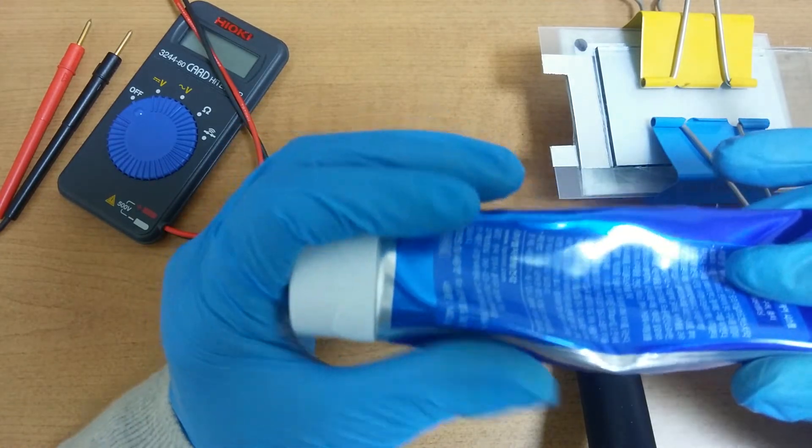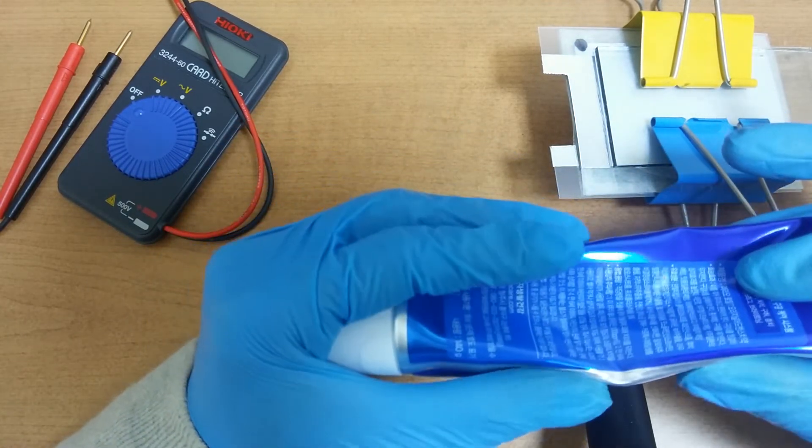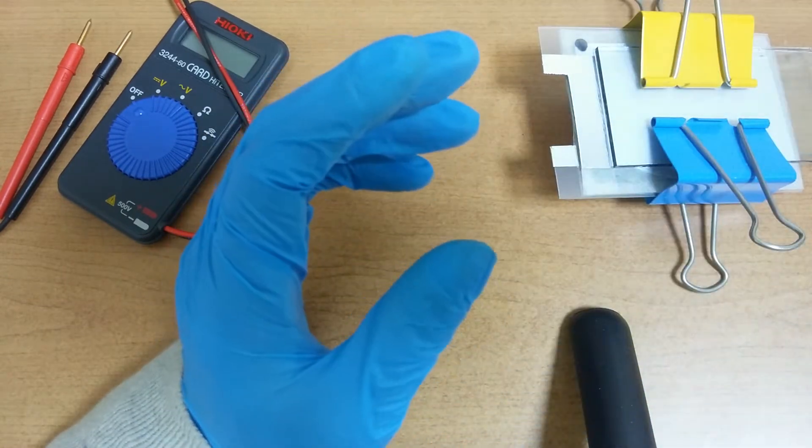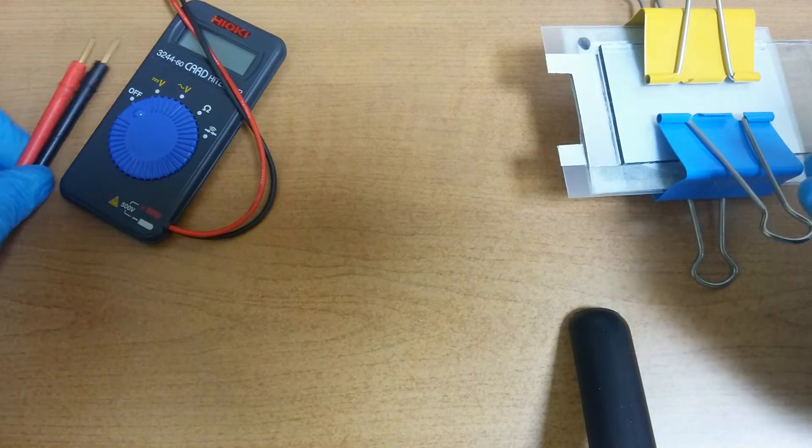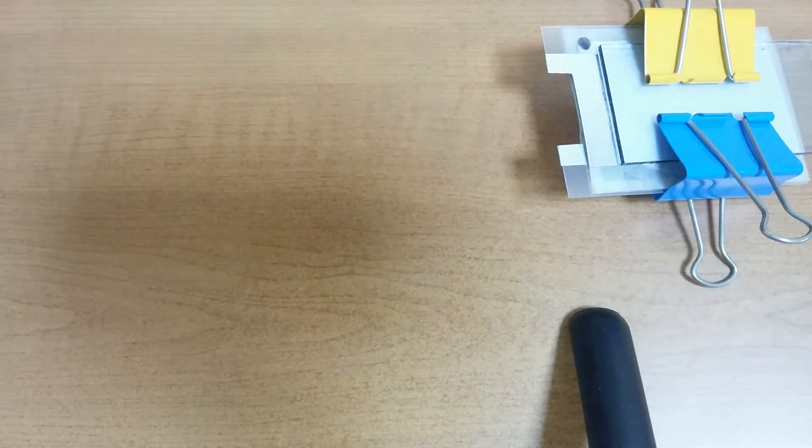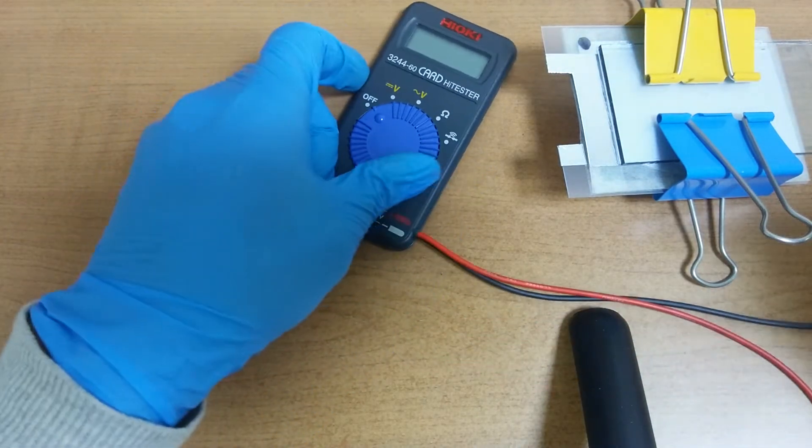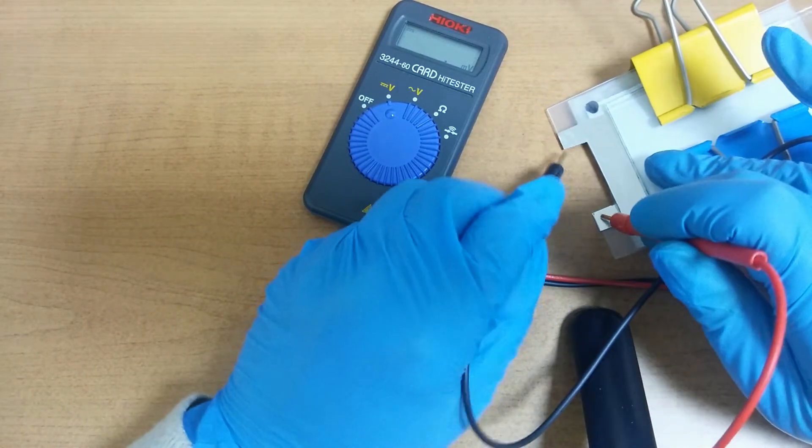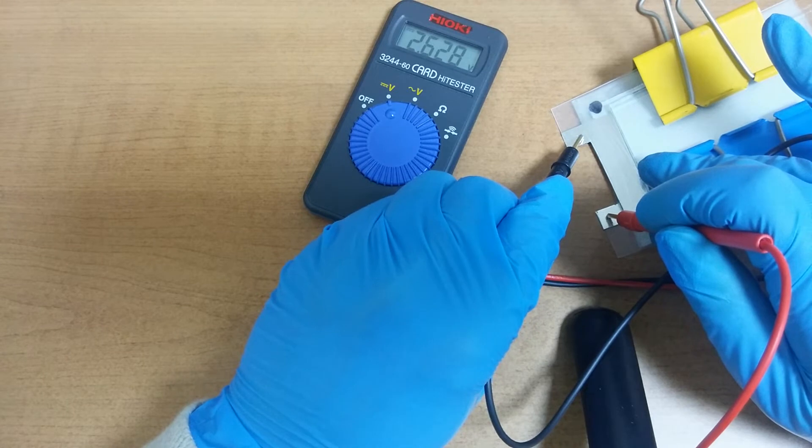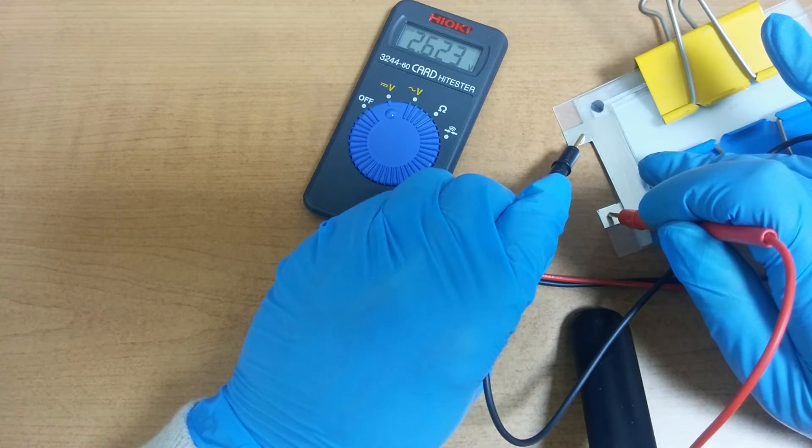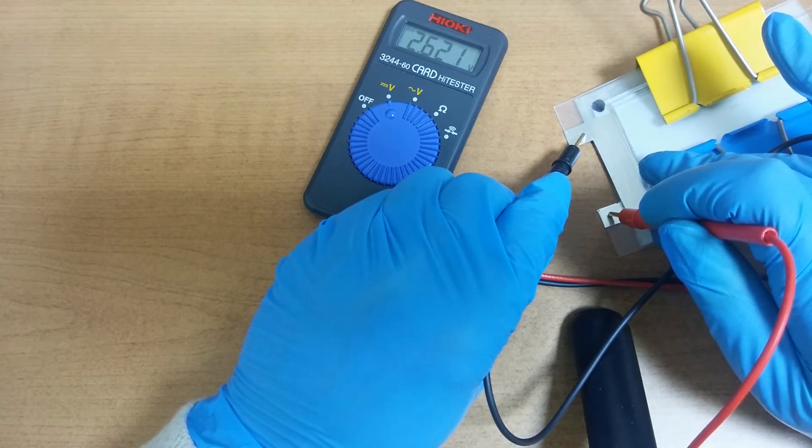Today, I will start the experiment with iron oxide. Iron, I-R-O-N, oxide. Now, 2.6 volts. It slowly, slowly, slowly drops.